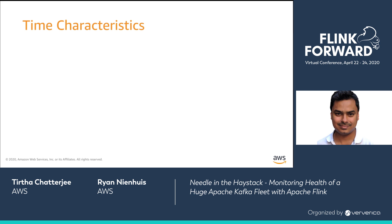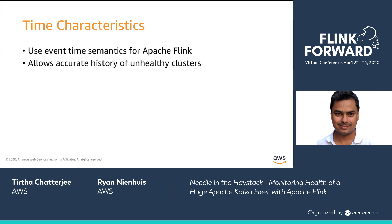I want to talk about the time characteristics of the Flink job. We use event time rather than processing time for all operations in the job. When the host publishes records into the Kinesis stream, it records the current timestamp using its local clock, and this is the timestamp we use for event time. Using event time creates an accurate history of when a cluster exactly became unhealthy, even when there is some processing lag from the Kinesis stream or when we resume the job after some downtime.